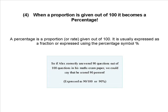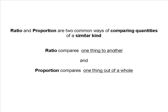So if Alex correctly answered 90 questions out of 100 questions in his maths exam paper, we could say that he scored 90 out of 100, or 90%.